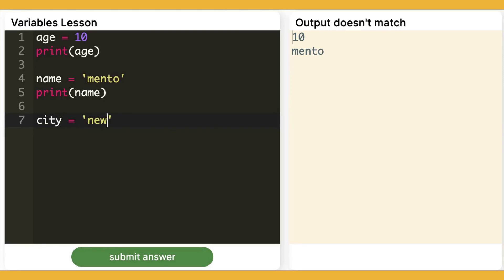Okay, let me try a variable called city and equal to New York. Print city. Got the answer in the output.